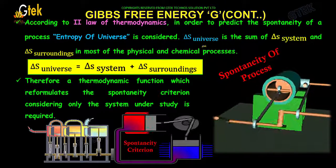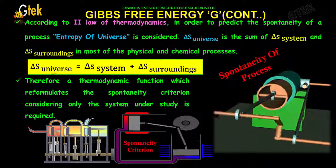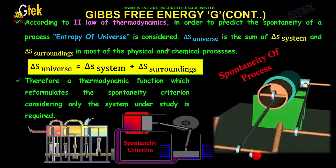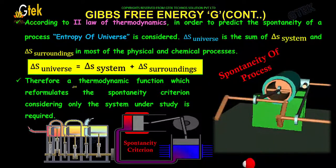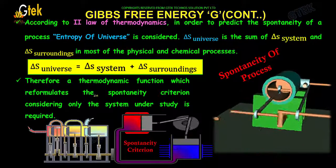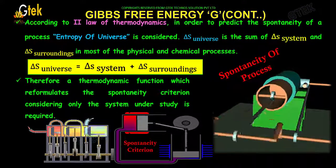Delta S universe is the sum of delta S of system and delta S of surroundings in most physical and chemical processes. Therefore, a thermodynamic function which reformulates the spontaneity criterion considering only the system and the study is required.